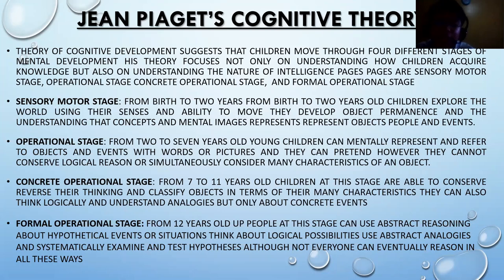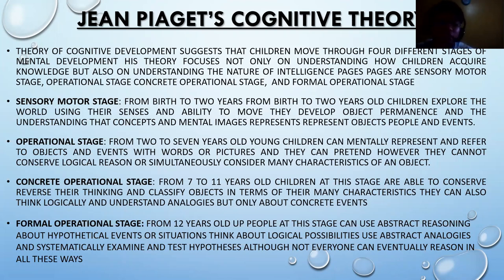The formal operational stage happens from twelve years old and up. People at this stage can use abstract reasoning about hypothetical events or situations, think about logical possibilities, use abstract analogies, and systematically examine and test hypotheses, although not everyone eventually reasons in all these ways.